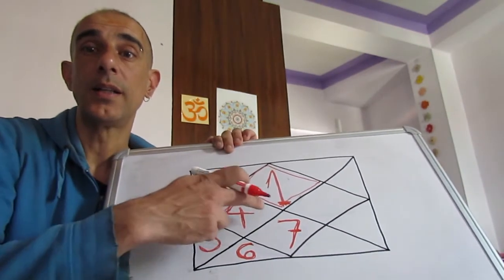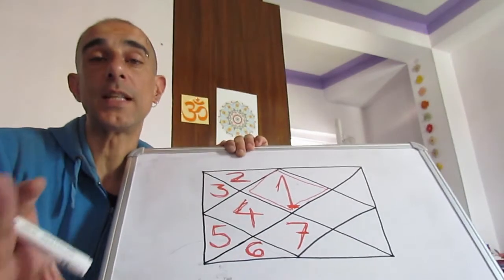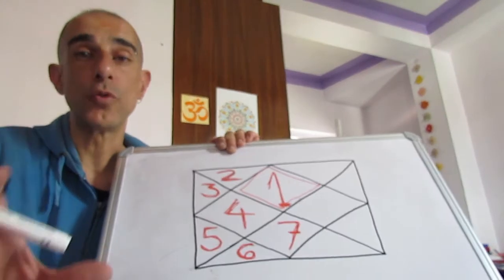Debajo de la casa uno, a ciento ochenta grados, directamente en la carta natal circular y aquí también, como veis, aspectando directamente por oposición, tenemos la casa siete. Esta es la casa siete. Aquí tenemos la casa uno, aquí tenemos la casa siete. Hoy aprendemos dónde están las casas.